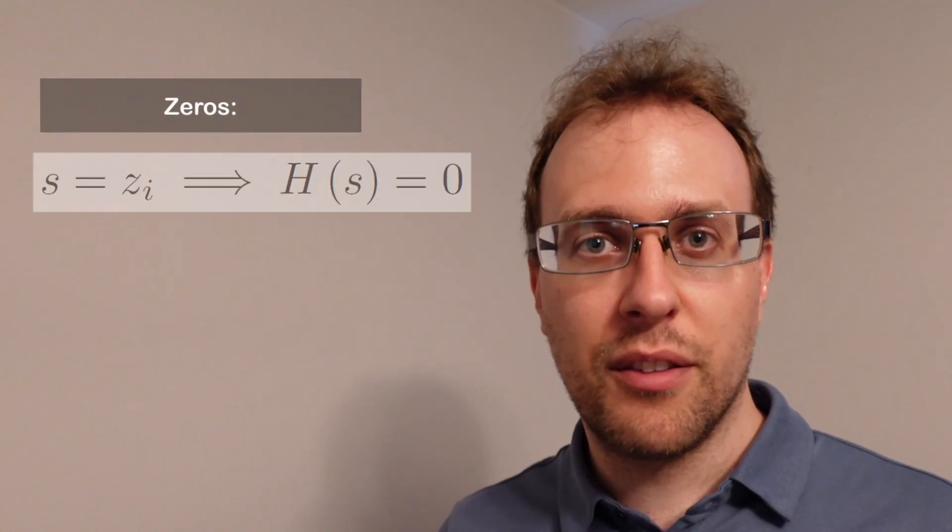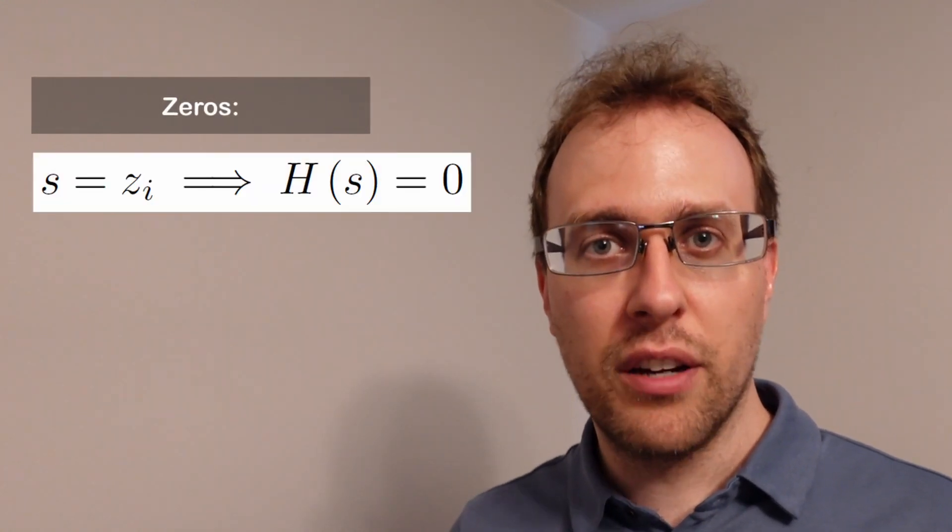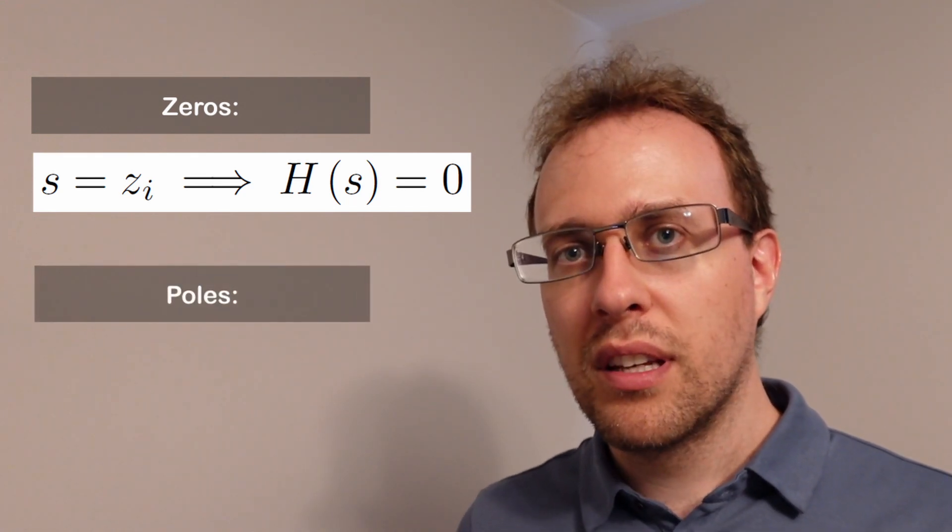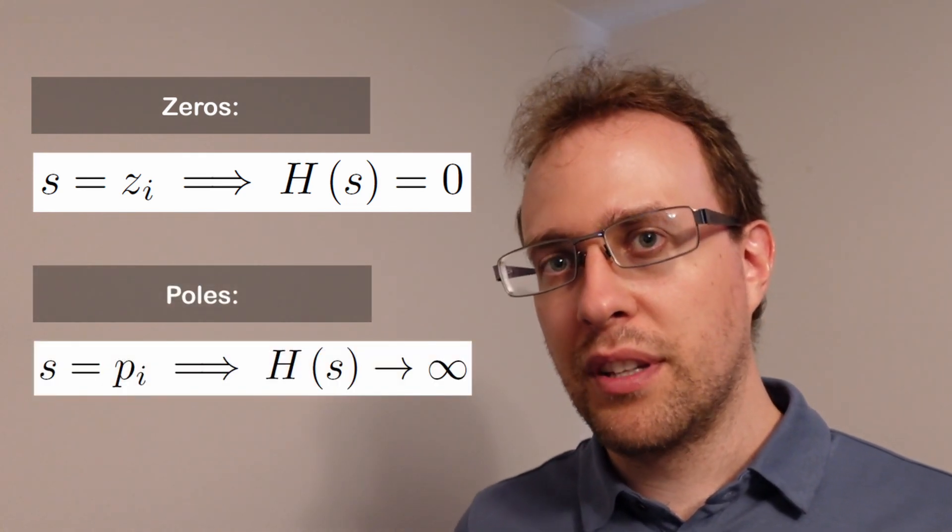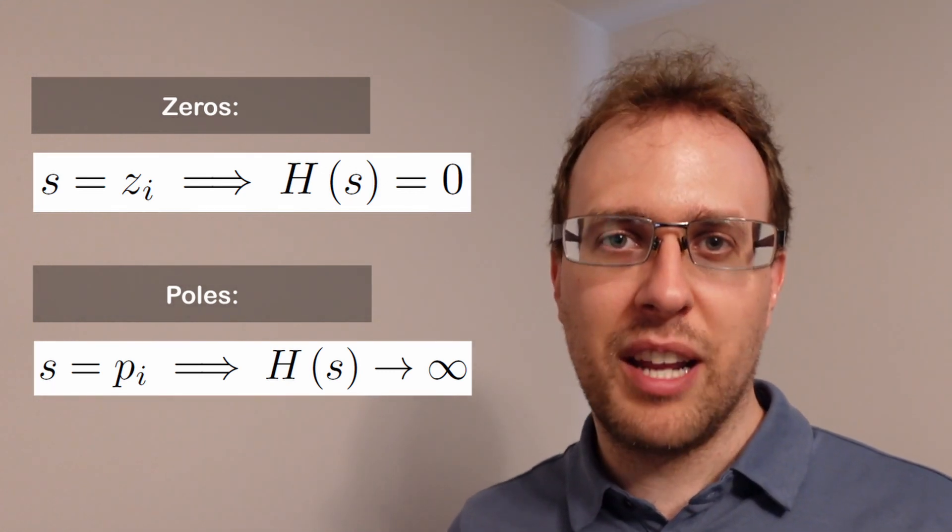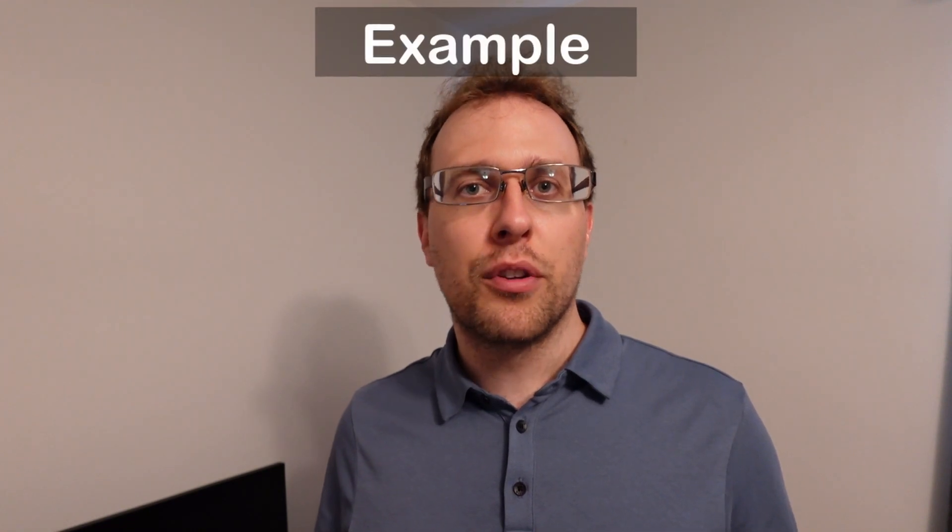So the system zeros are the values of s that are roots in the numerator, since they will make H of s equal to zero. And the system poles are the values of s that are roots in the denominator, since they will make H infinite because of dividing by zero.